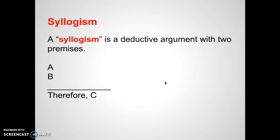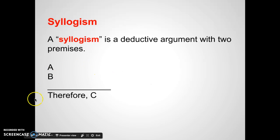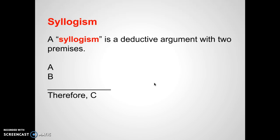Deductive arguments are usually put in a syllogism. A syllogism is a deductive argument with two premises — this is a key term you're going to want to know. A syllogism has a premise, another premise, and then some kind of conclusion. It doesn't need to be spelled out in a formal format; a lot of times a syllogism will be presented in an essay where we have two facts and from those two facts we draw a conclusion. We also sometimes call this syllogistic thinking.